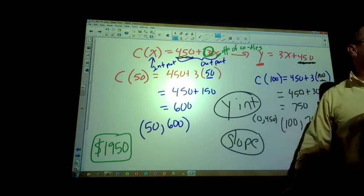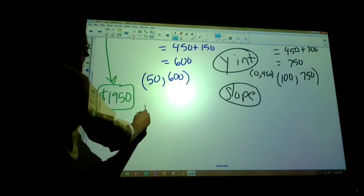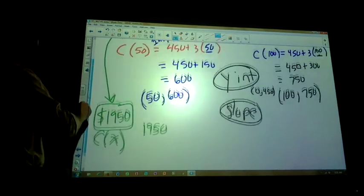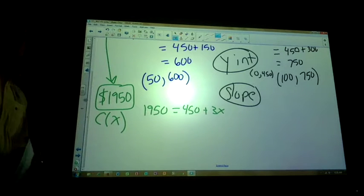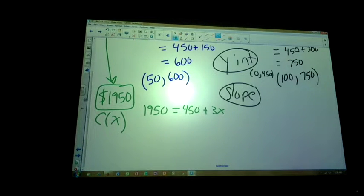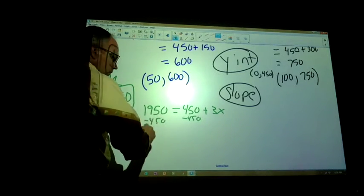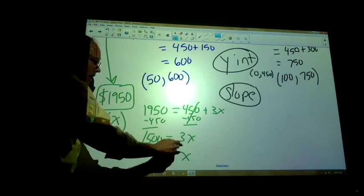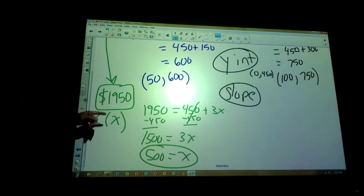1,950 equals 450 plus 3x. This tells us how many candles we would have to make to get $1,950. Subtract 450. That's 1,500. Divide by 3. So you have to make 500 candles. You have to have 500 candles sold to make that kind of profit.